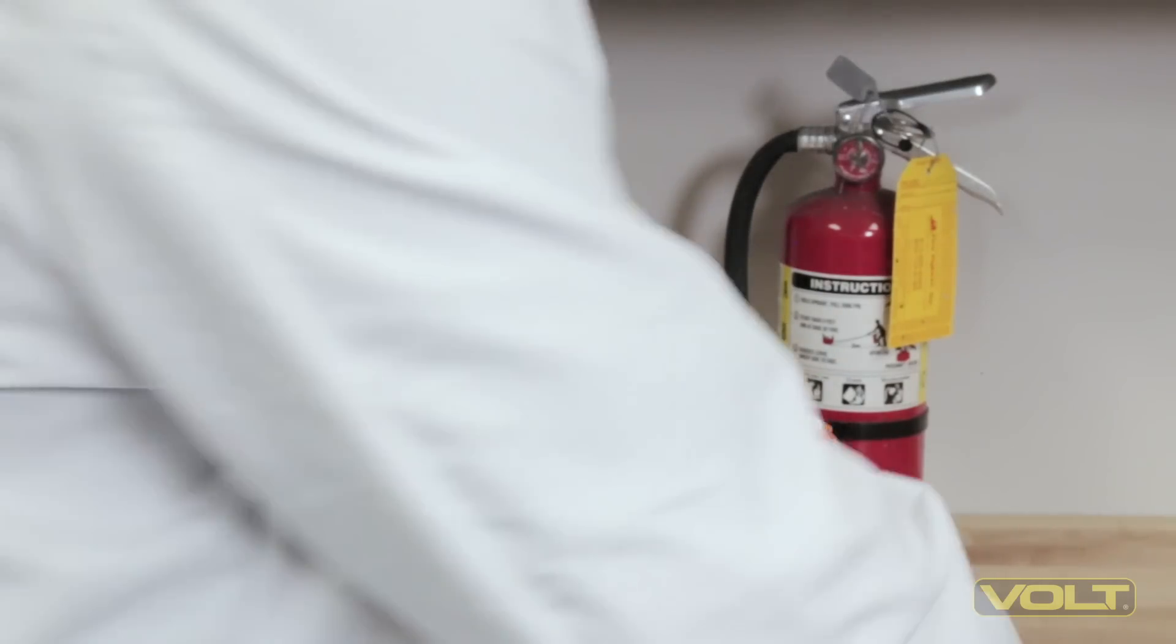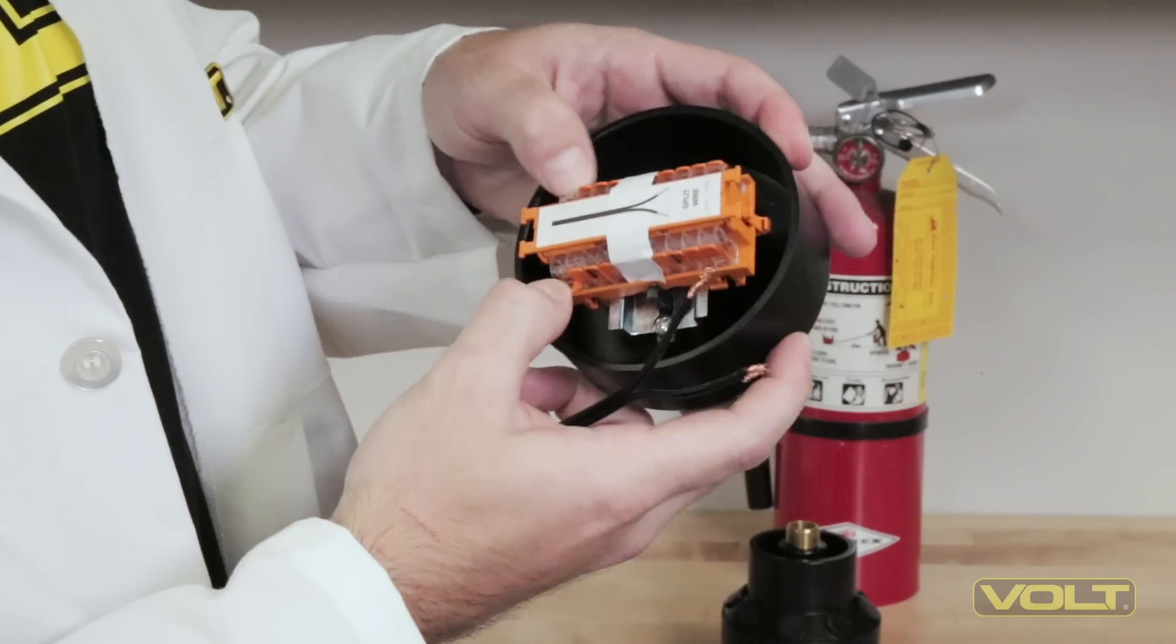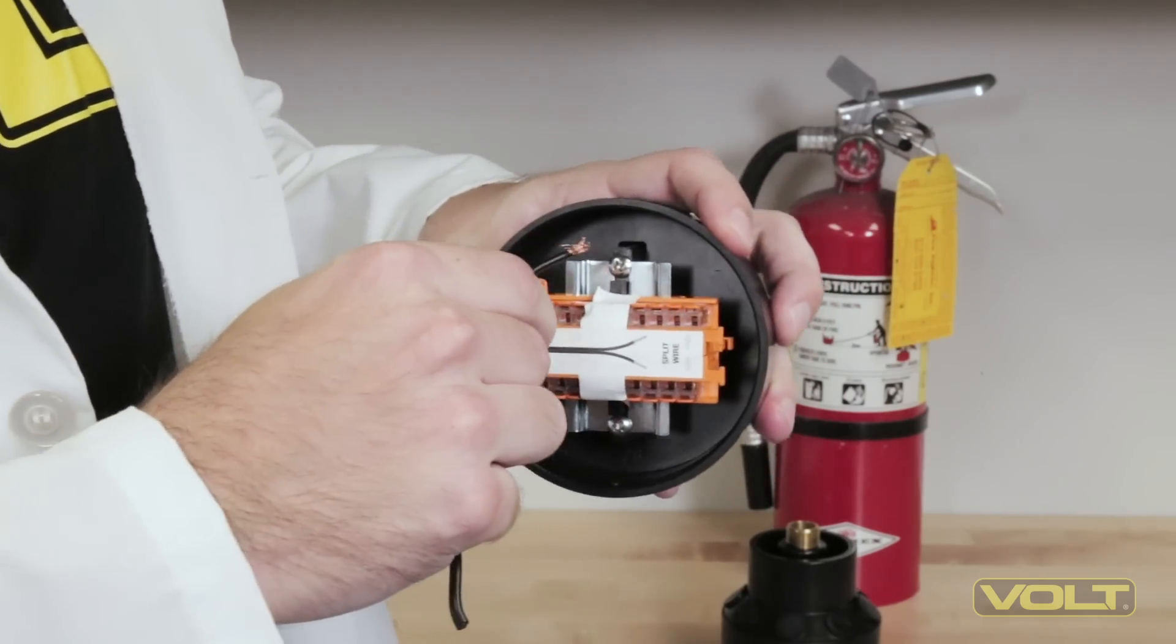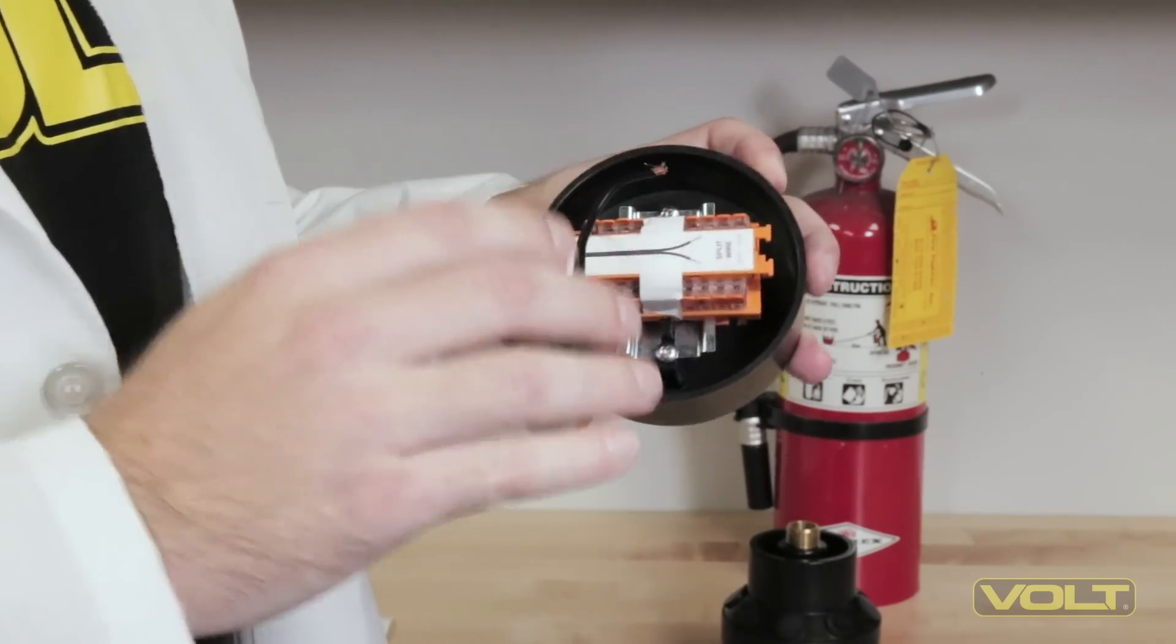To ensure that you have the proper connections made, simply open the levers to the fully open position, insert the wire into the opening, and re-close the tab, making sure you hear it click.